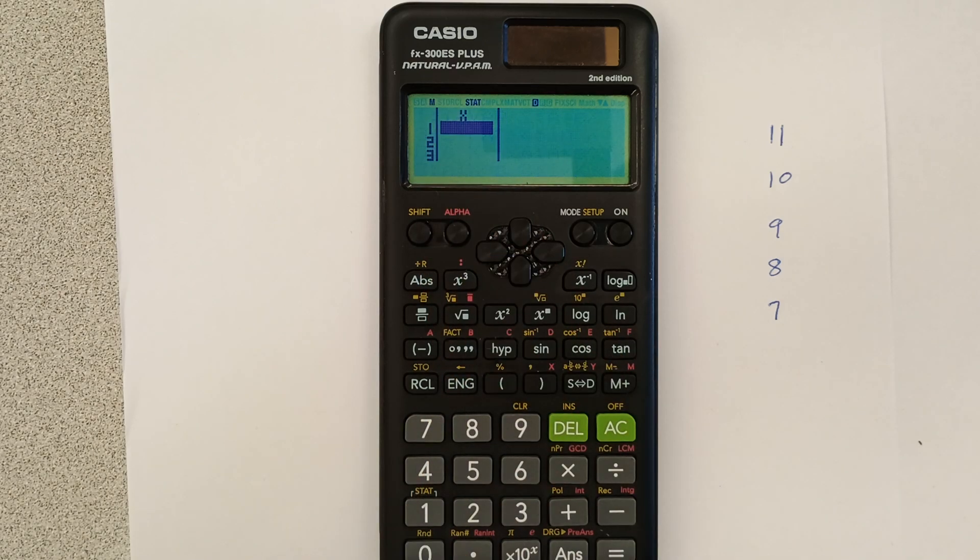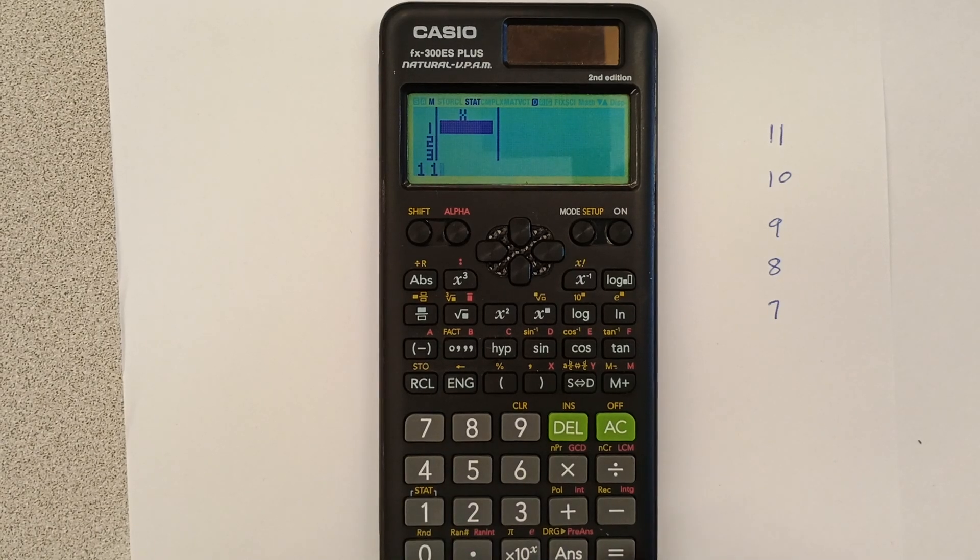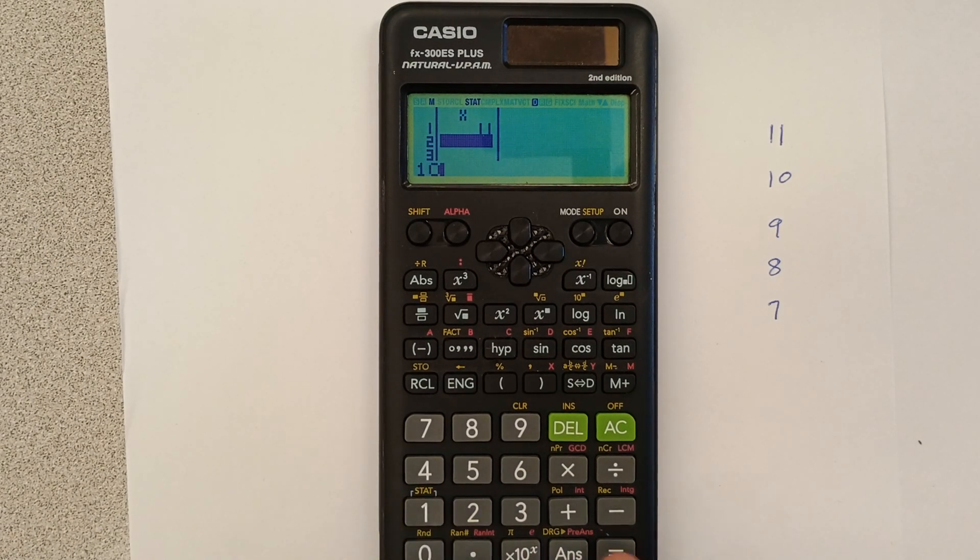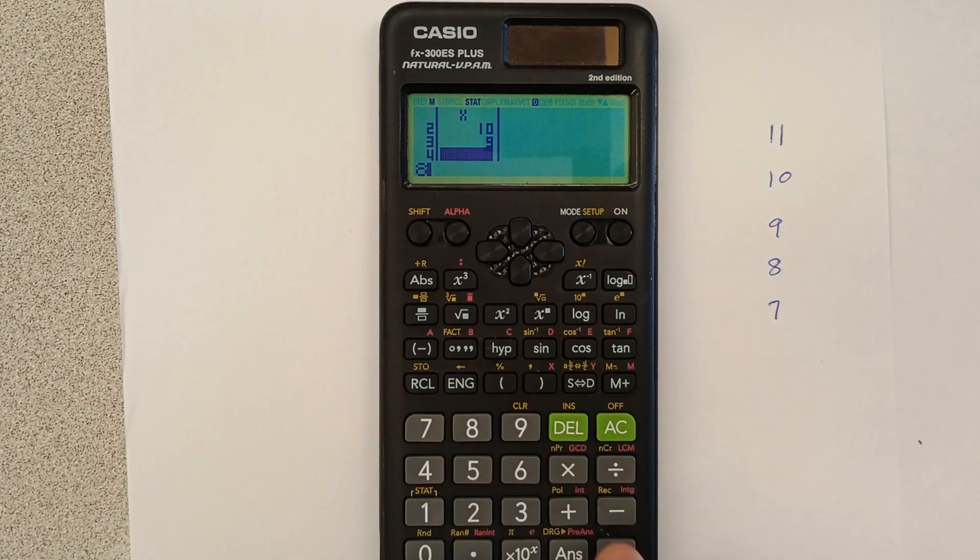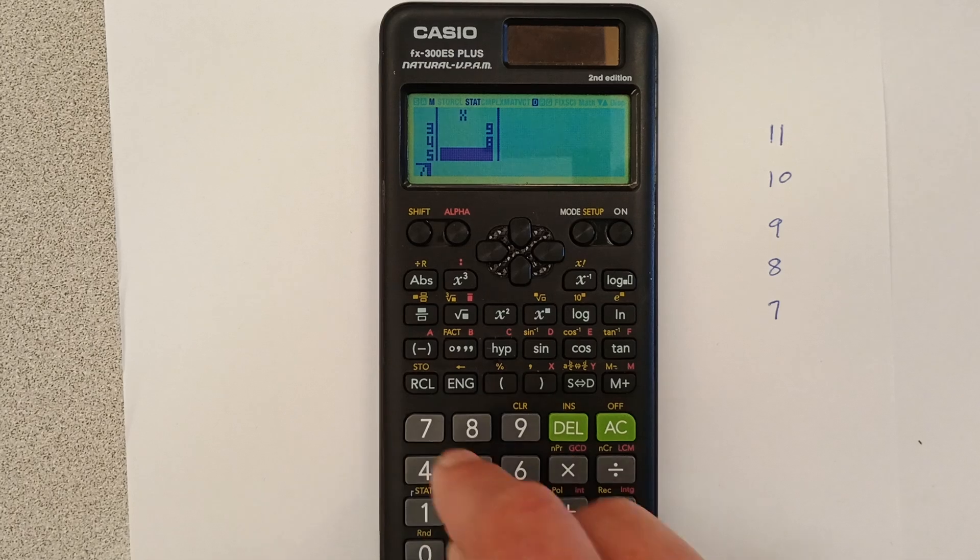Okay, so we're going to click the number one. And now we get our data set. Along the right side here I have some numbers for you. So let's go 11, enter, or equals, 10, 9, 8, and 7.